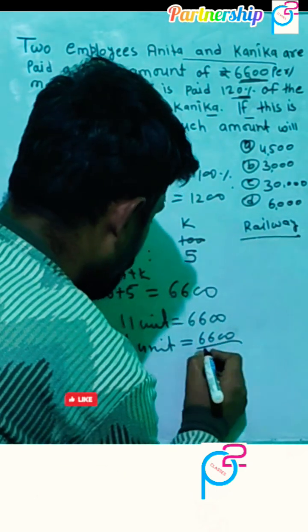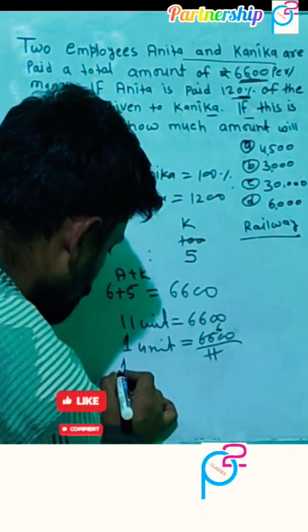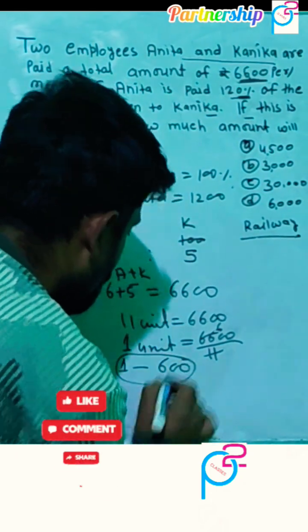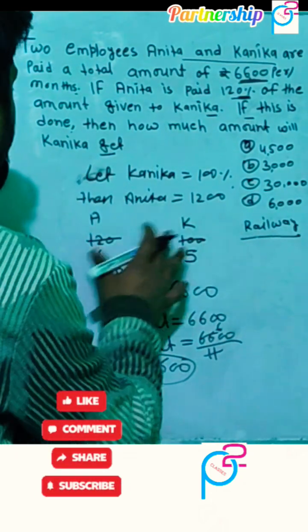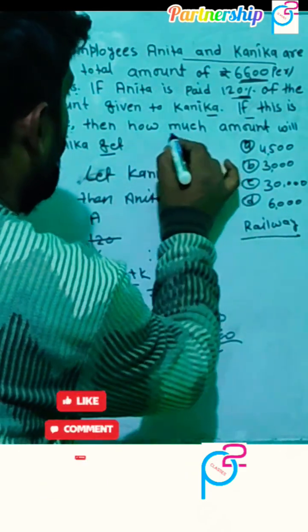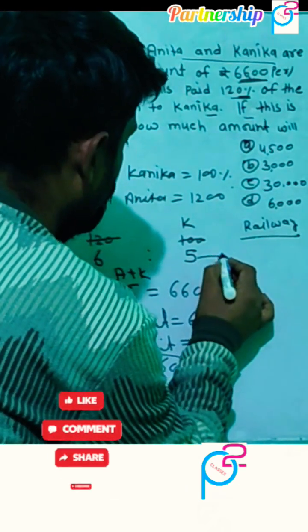6600 divided by 11, means one unit is equal to 600. If you want to find any value, you can find it easily. The question is asking how much amount will Kanika get. Kanika is 5 units,